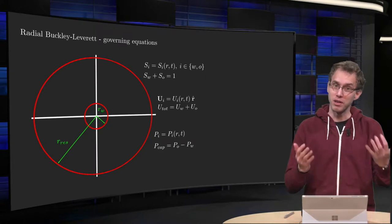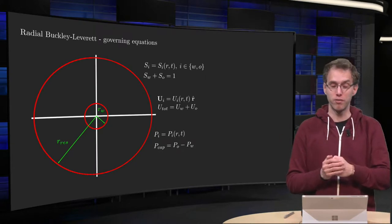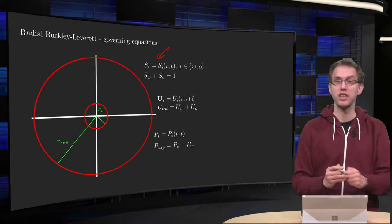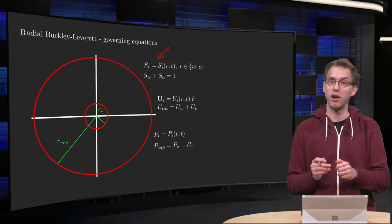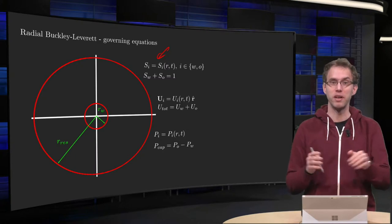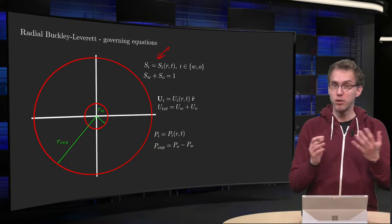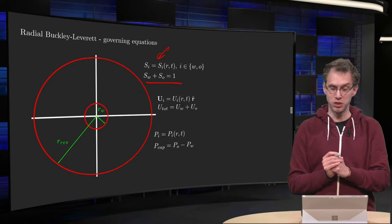Take a look at two-phase flow, two phases, say water and oil for example. Si are the saturations, we are looking at radial flow, so we assume that they only depend on radial coordinates r and time t, so no dependence on theta and z. And two-phase flow, so the sum of the saturations has to be equal to 1 as usual.